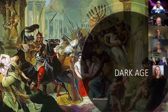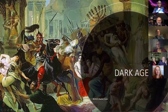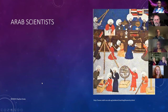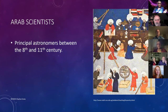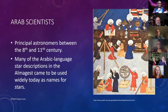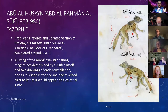Eventually, invasions in Europe overturn everything and send everyone into the dark ages, where a lot of this knowledge is lost. Fortunately, the Arab scientists were the principal astronomers between the 8th and 11th centuries, and many Arabic language star descriptions in the Almagest came to be widely used as names for stars today. One of the principal astronomers was Abu al-Hassan al-Rahman al-Sufi. Al-Sufi produced a revised and updated version of the Almagest called the Kitab Sur al-Kawakib, or Book of Fixed Stars, in 964 CE.